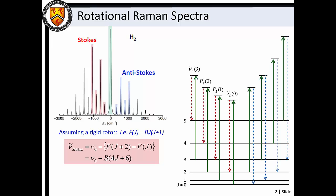Similarly, scattering processes that result in de-excitation of the molecule give rise to anti-Stokes lines to the high wavenumber side of the Rayleigh line.